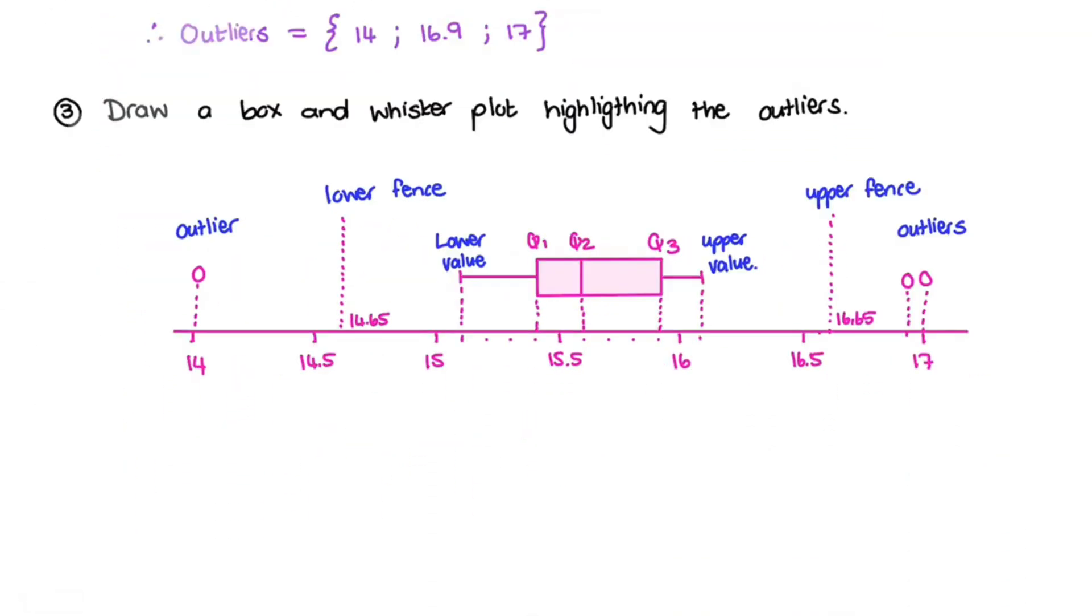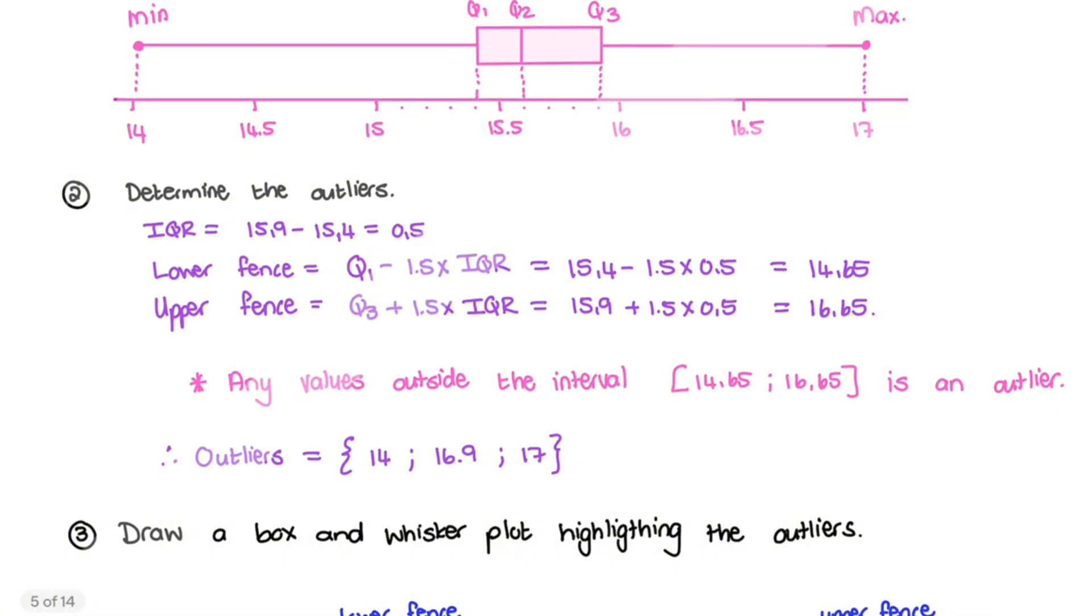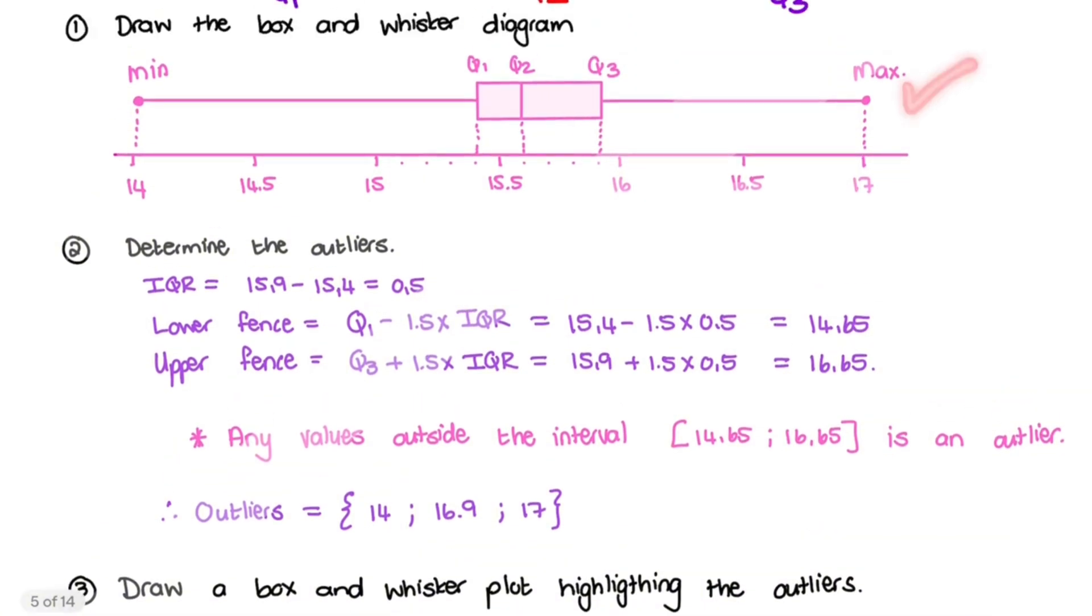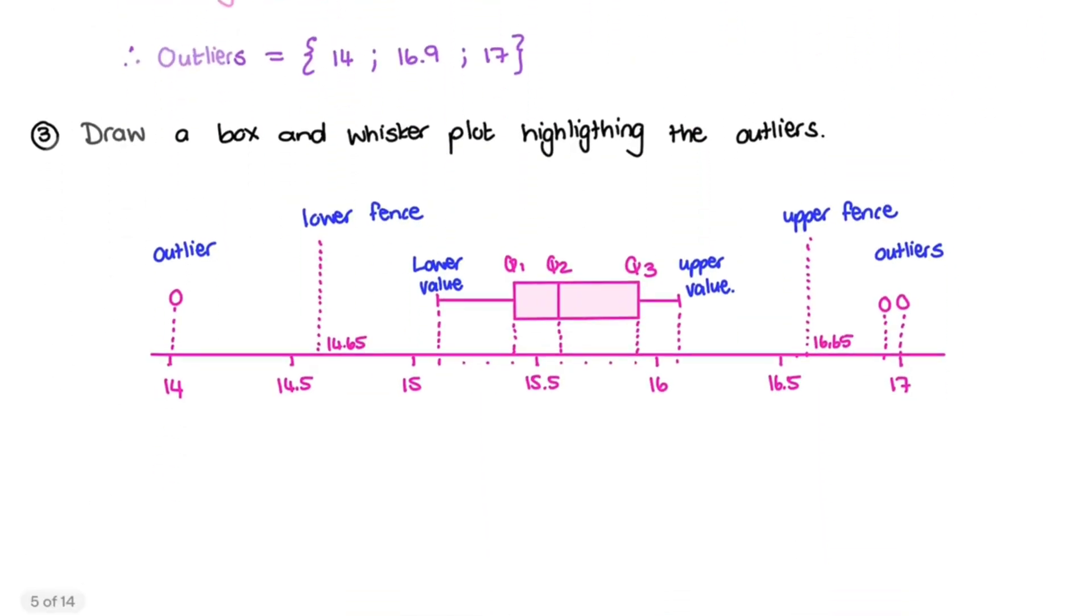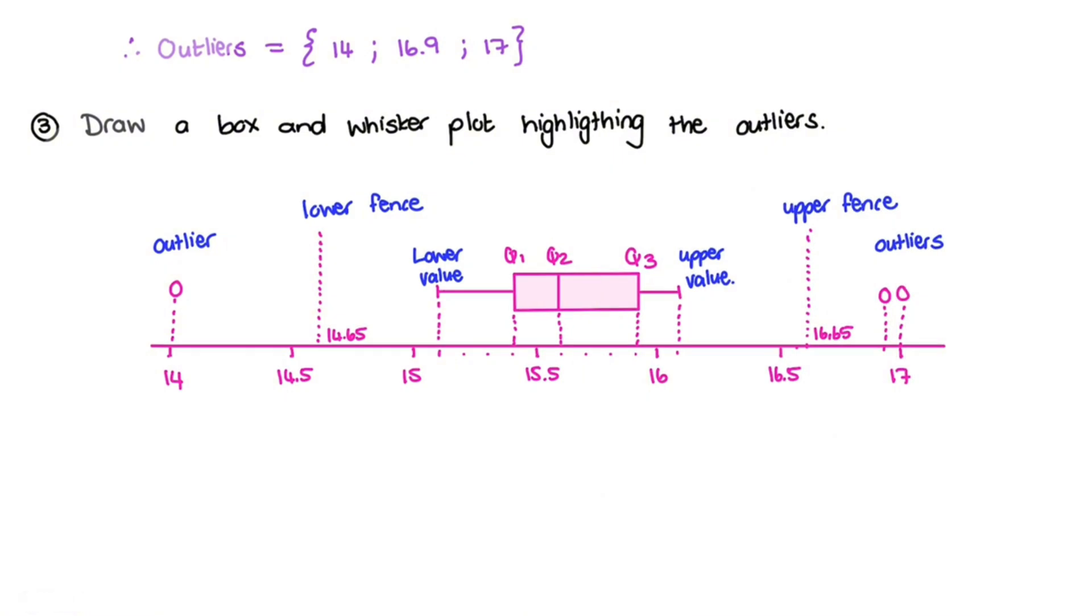Next up, we would draw a box and whisker diagram, plotting the outliers. So we will show the outliers. So it's the same as our first box and whisker diagram, but now we will consider the lower fence and the upper fence. So let's go through this quickly. So when I draw this box and whisker diagram, I'll start by plotting or finding the lower fence from our outlier calculation and the upper fence from our outlier calculation.